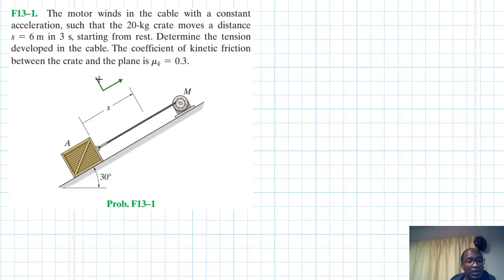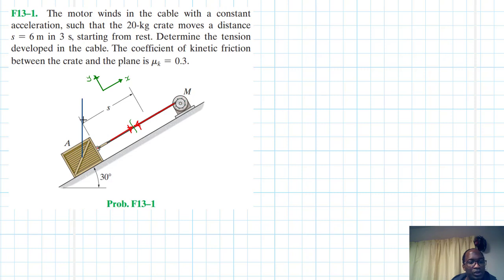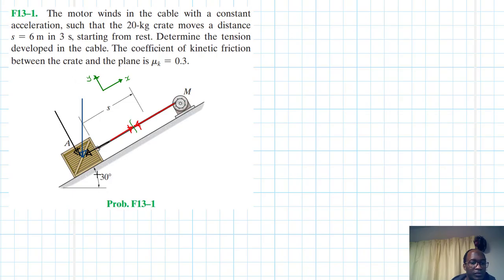Let's draw our coordinate system — this is our x, this is our y. On this cable there, we'll have some tension force on both sides. We also have the weight of this particular crate acting through the center of gravity, with one component along the x and another along the y. Motion is going towards the positive x, so we'll have friction in the opposite direction, and we'll have the normal force.